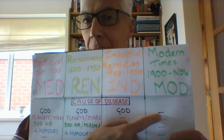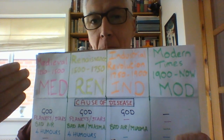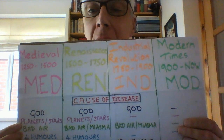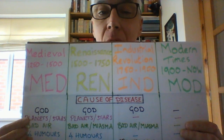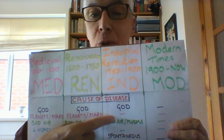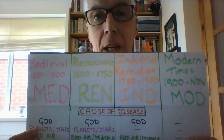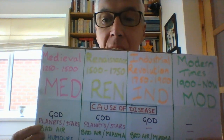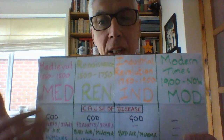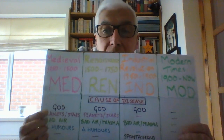Very few people believe that today. Why did that change? The importance of science and individuals like Louis Pasteur — hopefully you've got all of that — germ theory. The second major idea: planets and stars, strong in Medieval times, also believed in the Renaissance, but after that, no. People do not believe that the position of planets or stars causes disease. In Medieval times it made sense given their lack of understanding, but as we get more scientific in the Renaissance, that idea stops.